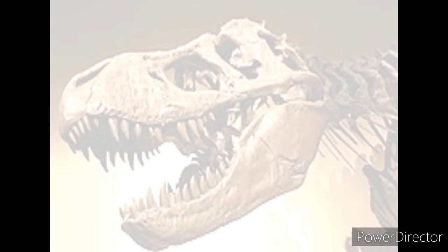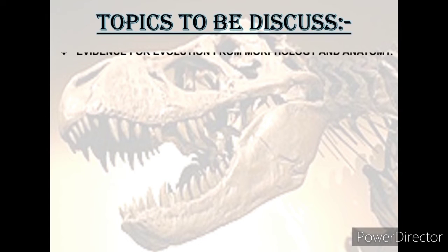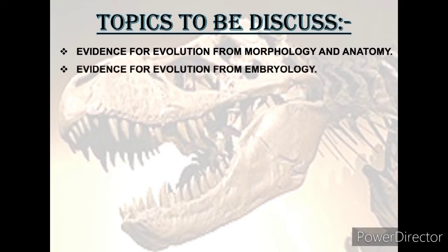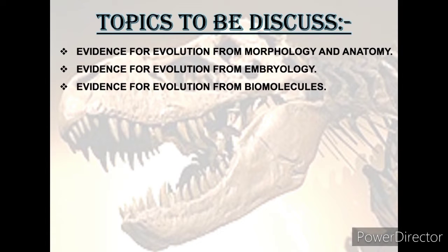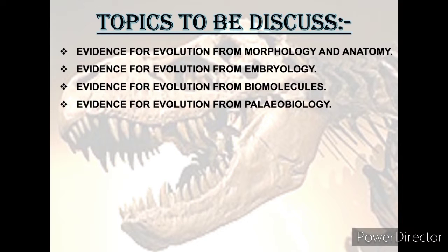Let's start with the topics we are going to mainly focus on. The topics are: Evidence for Evolution from Morphology and Anatomy, Evidence for Evolution from Embryology, Evidence for Evolution from Biomolecules, and Evidence for Evolution from Paleobiology.